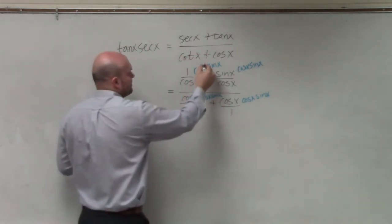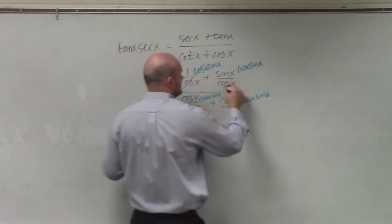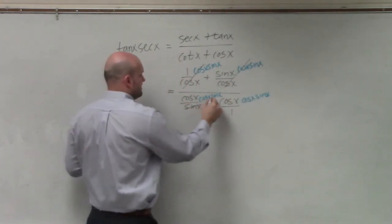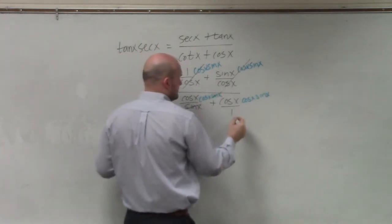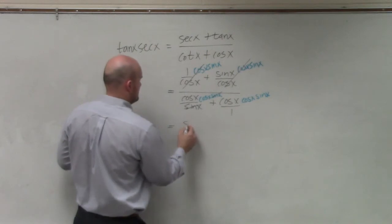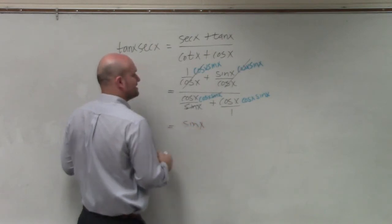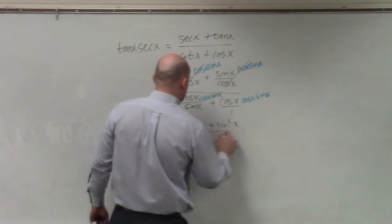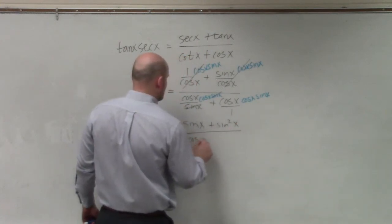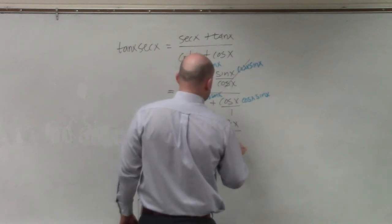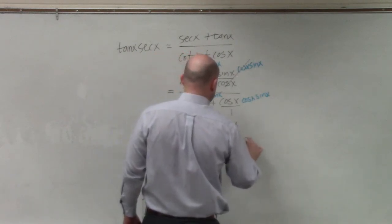What happens? That divides out. Those divide out. And therefore, I'm left with that. So now I have sine of x plus sine squared of x all over cosine squared of x plus cosine squared of x times sine of x.